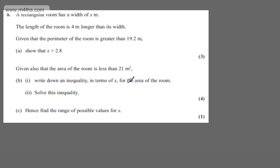In question number 8, we're told a rectangular room has a width of x meters. The length of the room is 4 meters longer than its width. Given that the perimeter of the room is greater than 19.2 meters, in part A for 3 marks, we need to show that x is greater than 2.8.